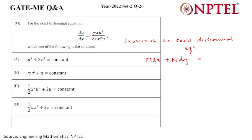...is integration of M dx plus integration of terms free from x in N dy equals C. Here x will take as is, and in place of y it is du.